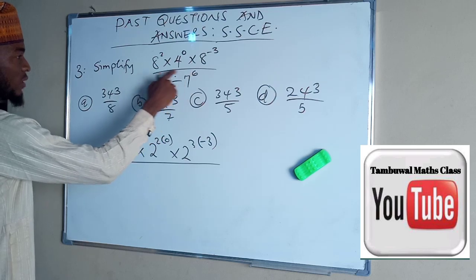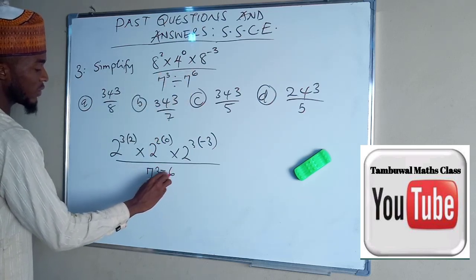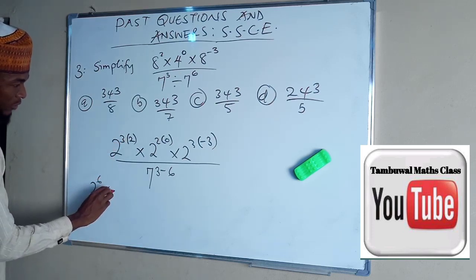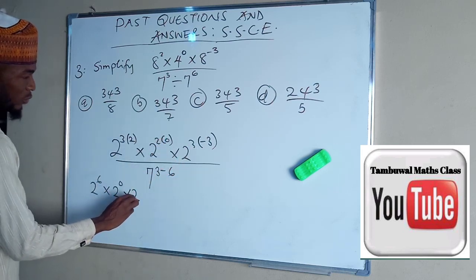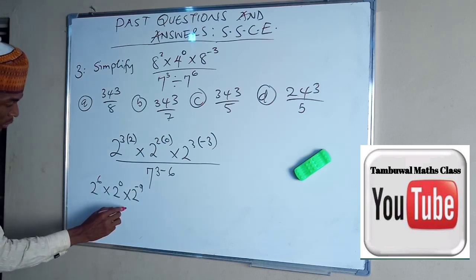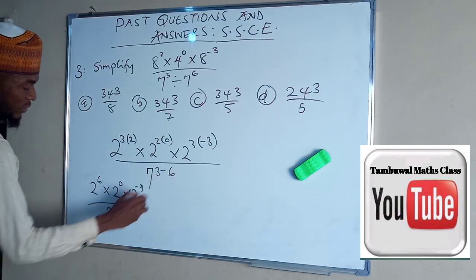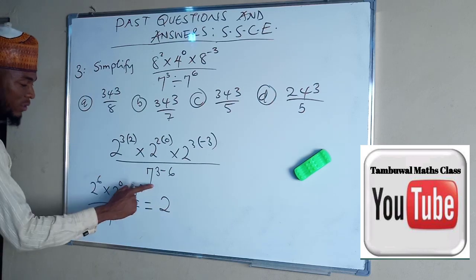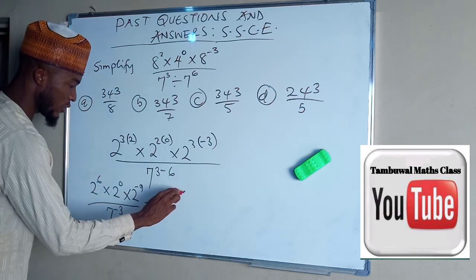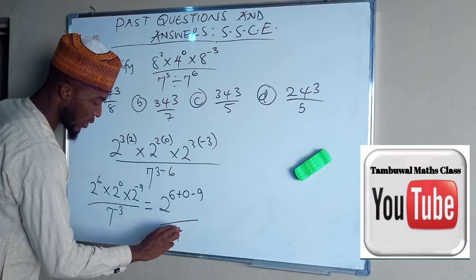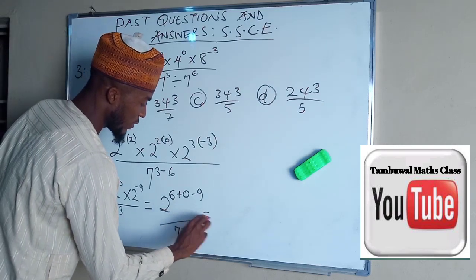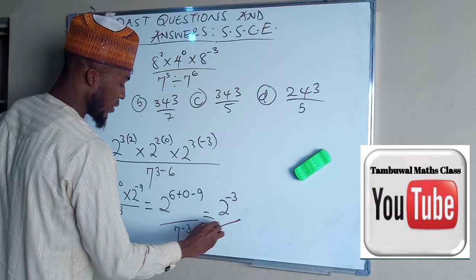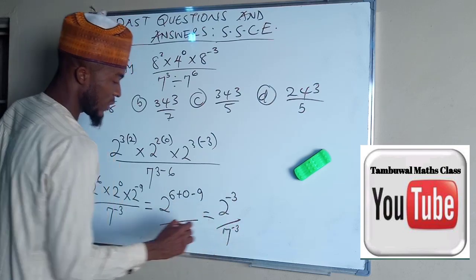And the numbers at the denominator are already having the same base, so we just subtract the index, which is 7 raised to the power of 3 minus 6. This is 2 power 6 times 2 power 0, because 2 times this is 0, and times 2 power negative 9, all divided by 7 raised to the power of this minus this is minus 3. And this will be the same thing as 2 power, you add the index together, this is 6 plus 0 minus 9, divided by 7 power negative 3. And this will give us 6 plus 0, 6 minus 3, minus 9 is 2 raised to the power of negative 3 all over 7 raised to the power of negative 3.